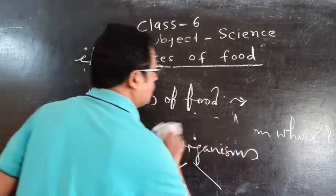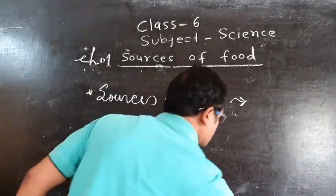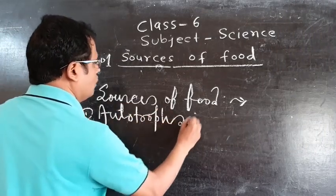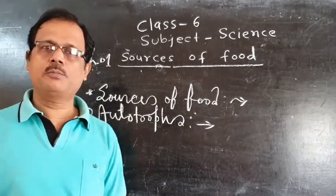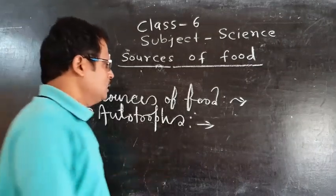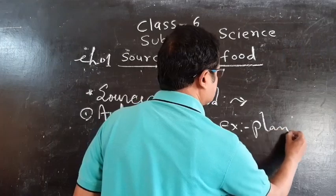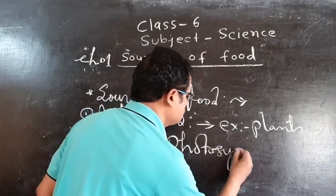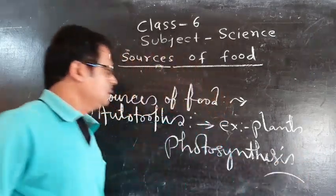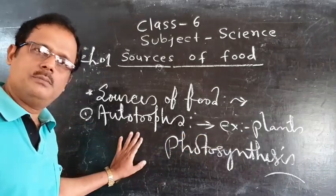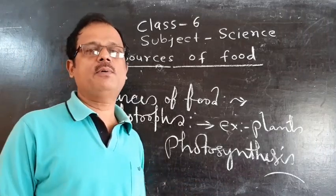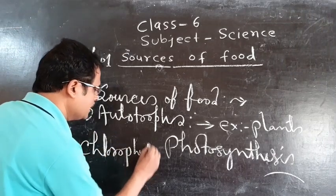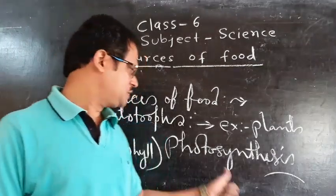We will now study about autotrophs. Autotrophs are the living organisms that prepare their own food. Plants are the example of autotrophs because they prepare their food by the process of photosynthesis. With the help of the green pigment called chlorophyll, they prepare their food. This process is called photosynthesis.